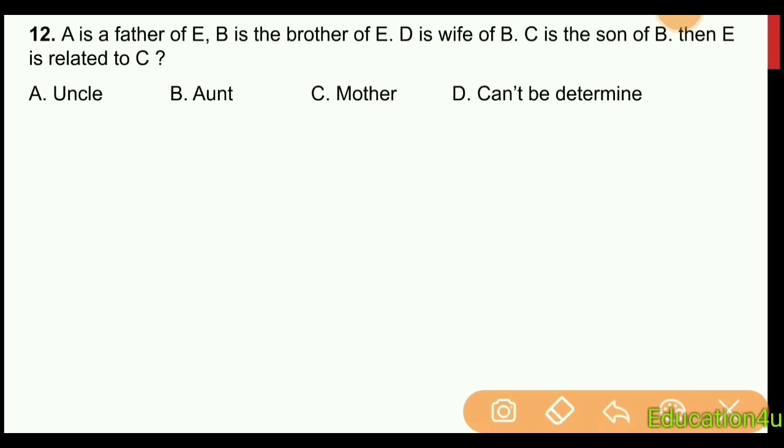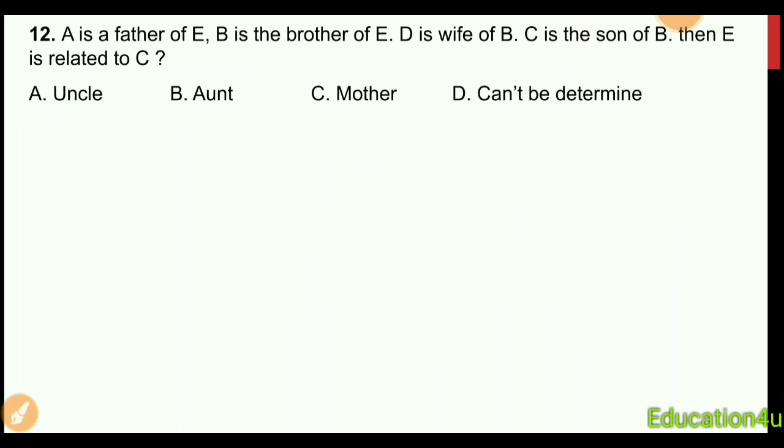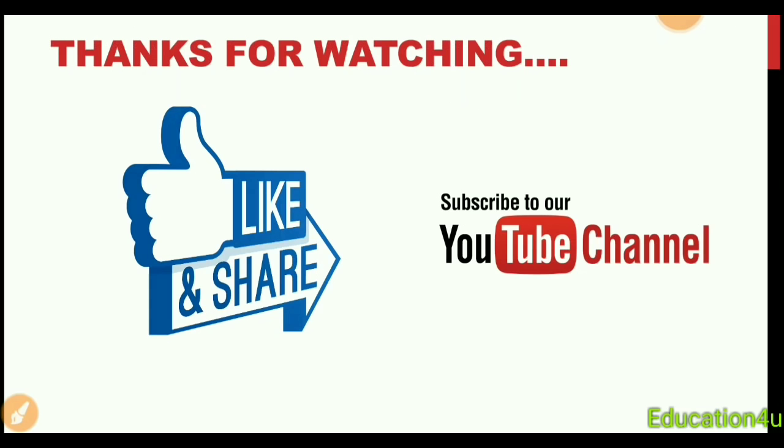Family relation problem: A is the father of E. B is the brother of E. D is the wife of B. C is the son of D. Then how is E related to C? Following the relationships: E's brother B is married to D, and C is their son. So E is the uncle of C. Thank you for watching. Please like and subscribe to my channel.